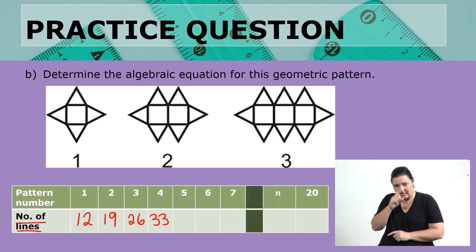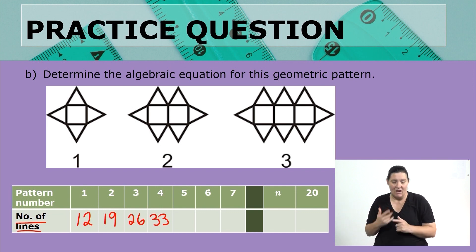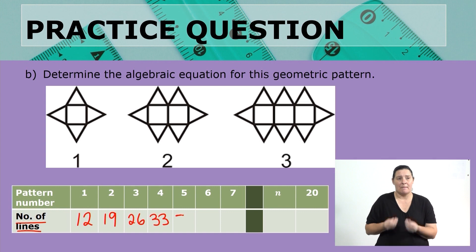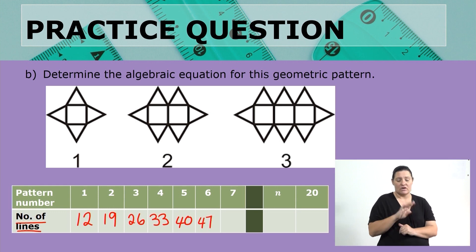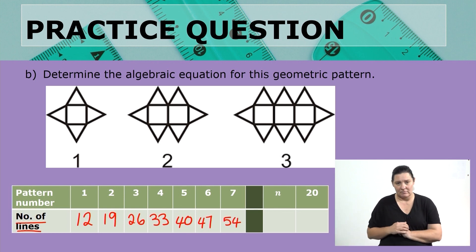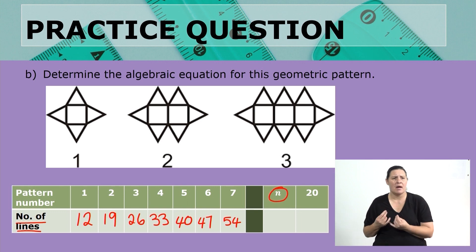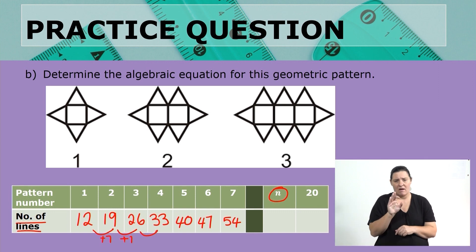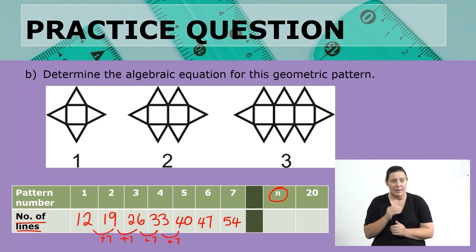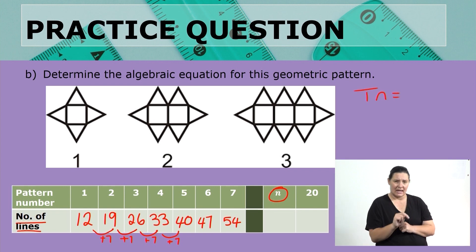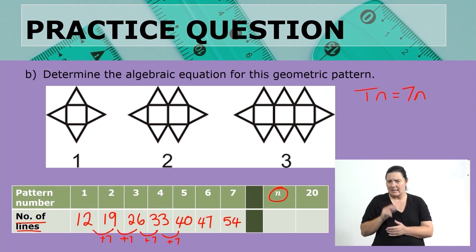From one picture to the next we are adding 7 lines. From 26 adding 7 gives 33. Adding 7 again gives 40, then 47, then 54. So we are adding 7 every time. Now, what would be the nth term? To find the nth term we need the general term. Since we are adding 7 each time, our tn is going to start with 7n. We then need to find what number to add or subtract to complete the algebraic equation.